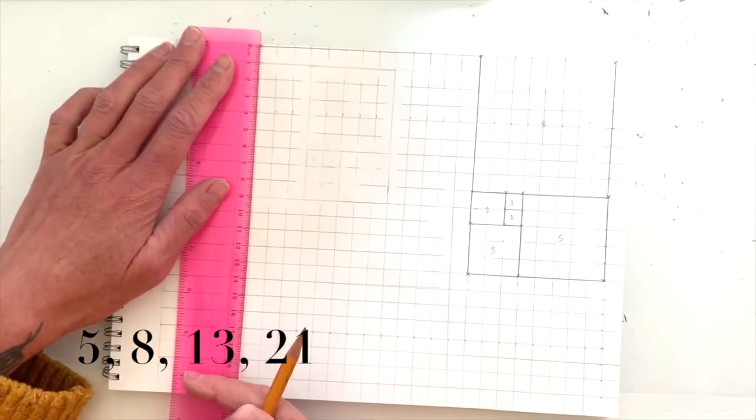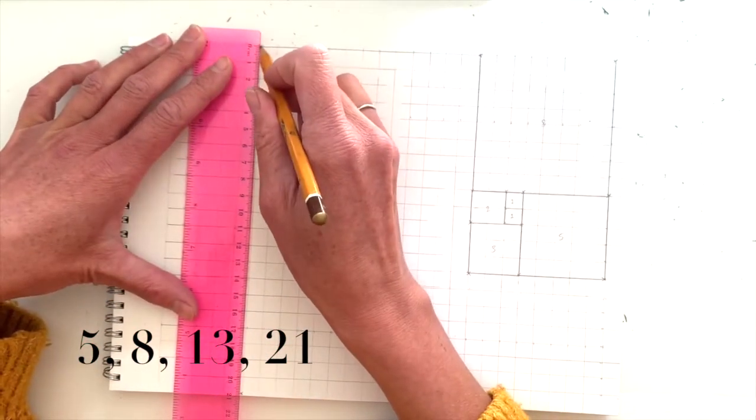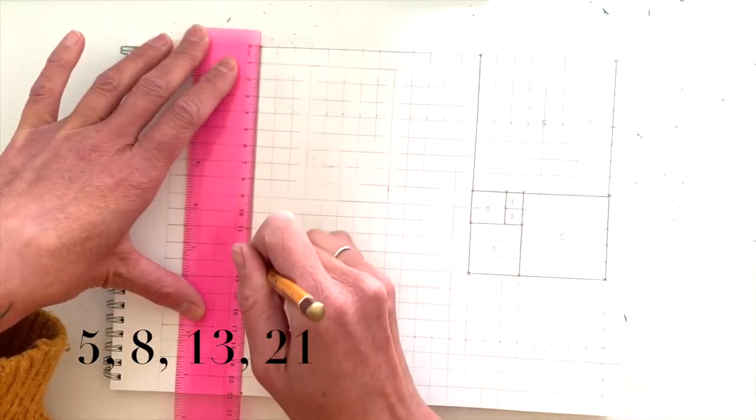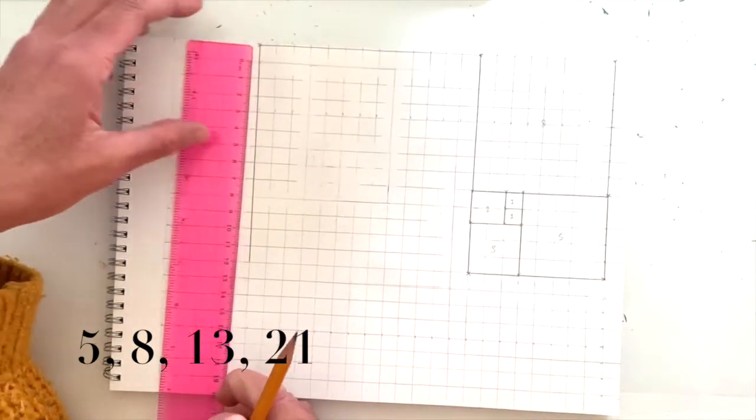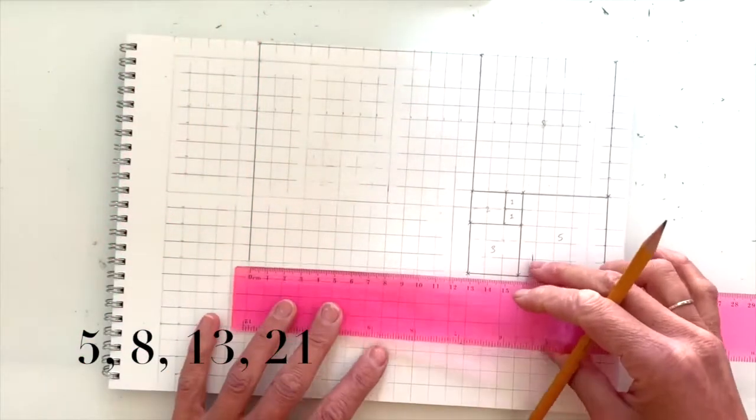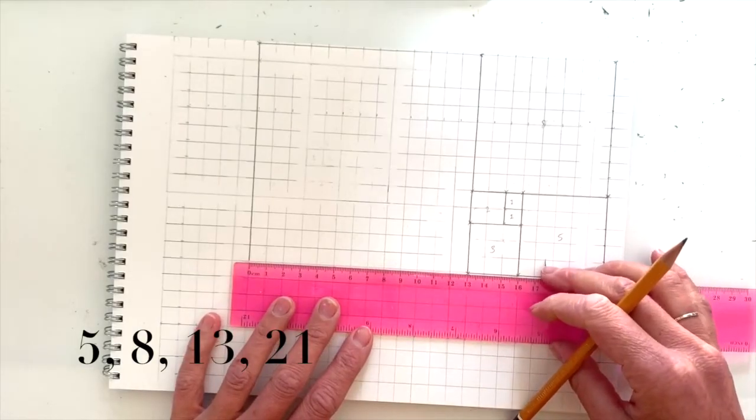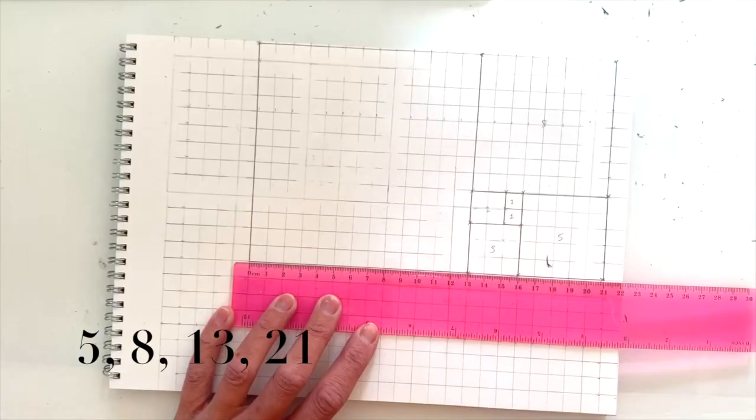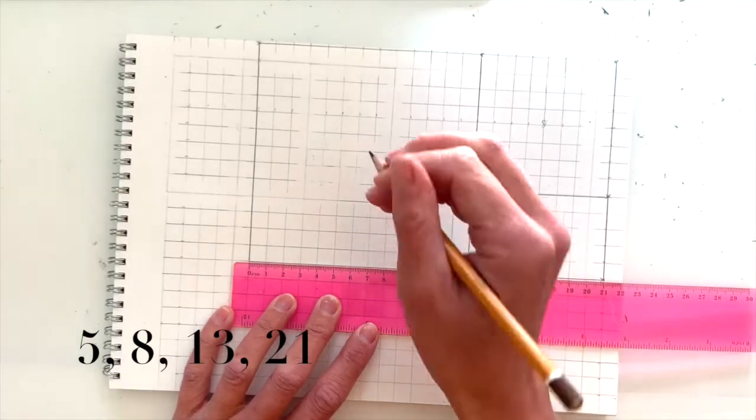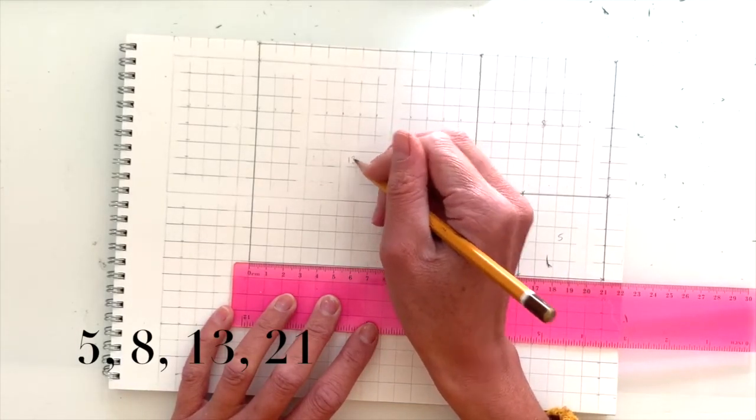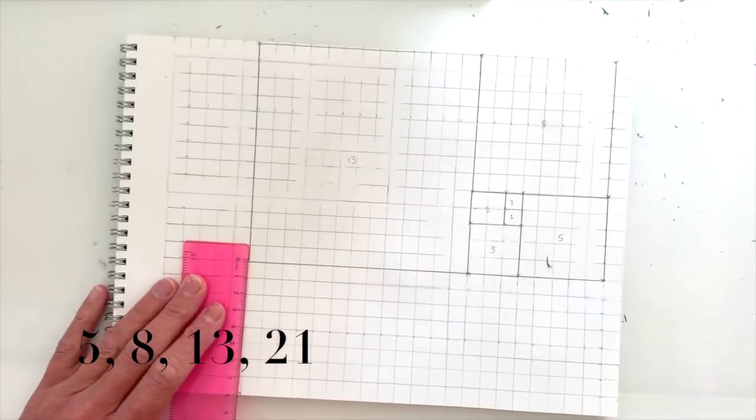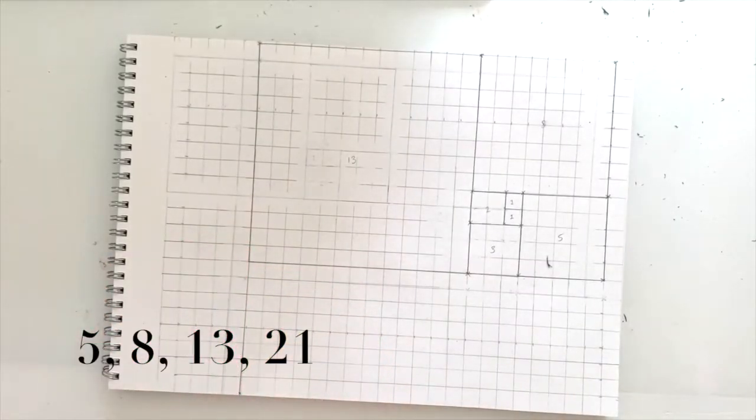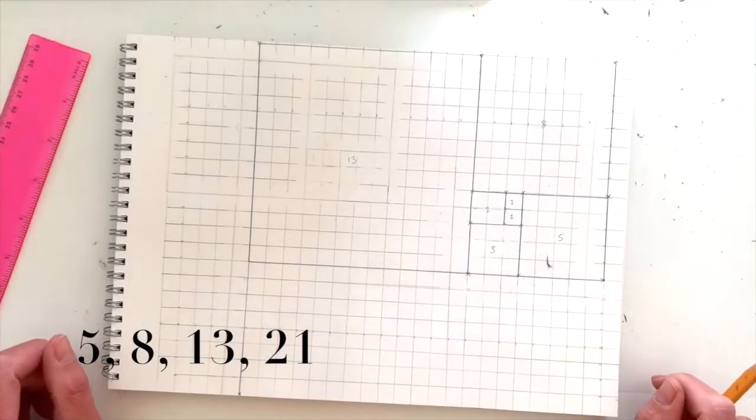Next box to the left will be thirteen. Five plus eight equals thirteen. And finally, the last box down is twenty-one centimeters, but you'll notice that you don't have enough space to do that.